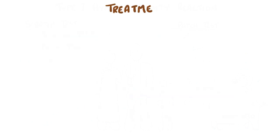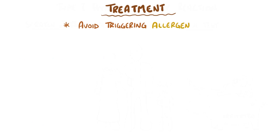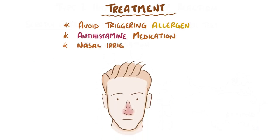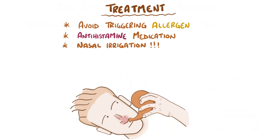Typically, the best thing for allergic rhinitis is to simply avoid the triggering allergen if possible. If there are symptoms, antihistamine medications can be used to suppress the effect of mast cell degranulation. Nasal irrigation can flush out the sinuses, which reduces the congestive symptoms of allergic rhinitis.